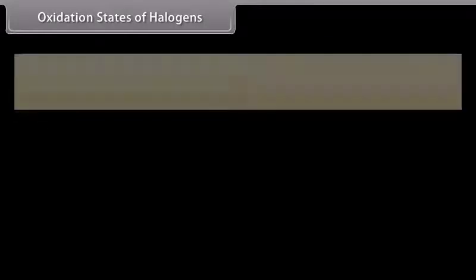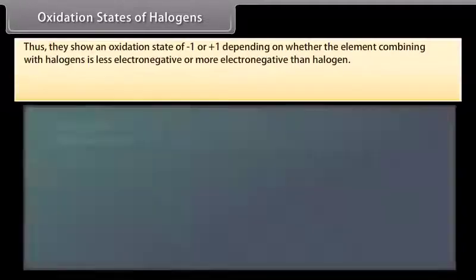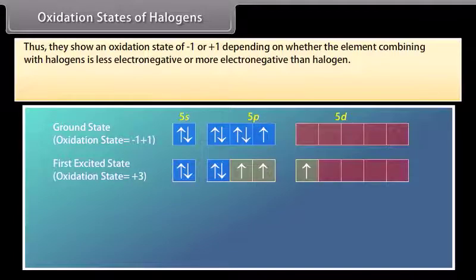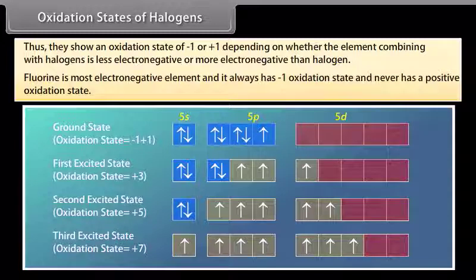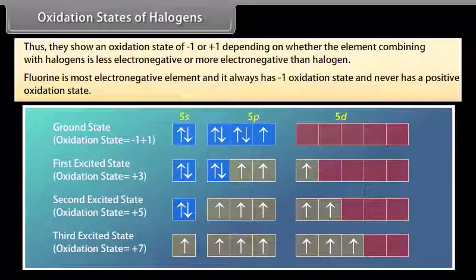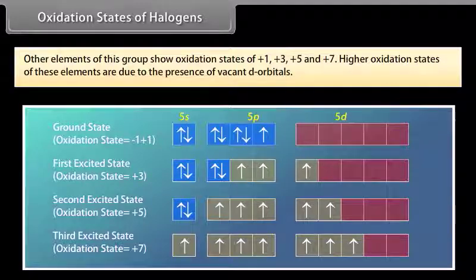Oxidation states of halogens: All halogen family elements tend to acquire noble gas electronic configuration by either accepting an electron (forming a monovalent anion) or by sharing one electron. They show oxidation states of −1 or +1. Fluorine is the most electronegative and always has a −1 oxidation state; it never has a positive oxidation state, and higher oxidation states are not possible as it has no vacant d-orbitals. Other elements show oxidation states of +1, +3, +5 and +7 due to the presence of vacant d-orbitals.